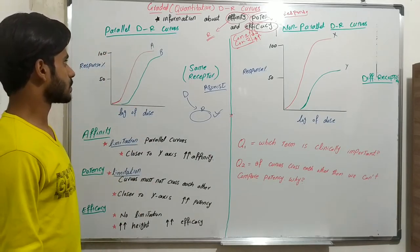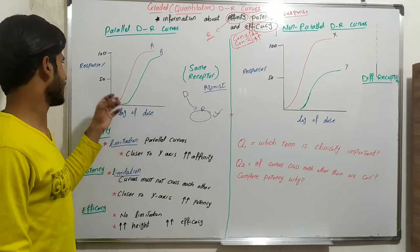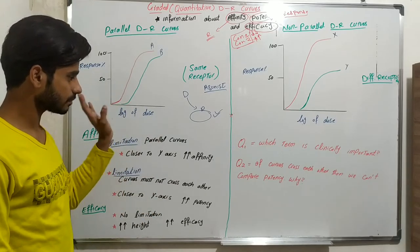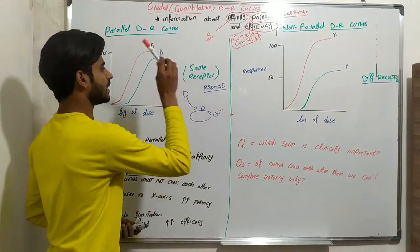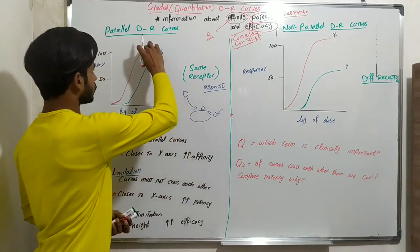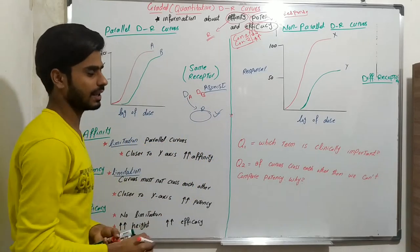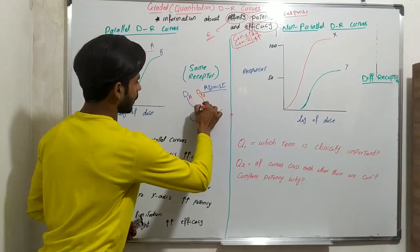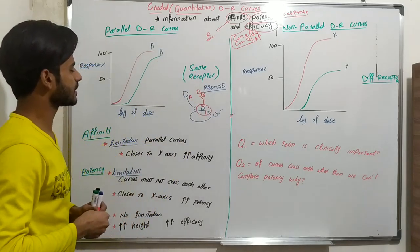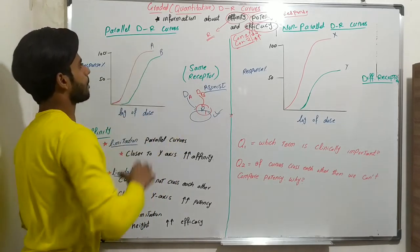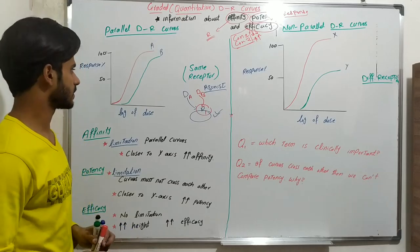In parallel dose-response curves, we take the log of the dose on the x-axis and the response on the y-axis. Parallel means the drugs have the same receptors. For example, drug A and drug B both have receptor R1 — same receptor, different drugs. Because they share the same receptor, their curves run parallel, so we call them parallel dose-response curves.